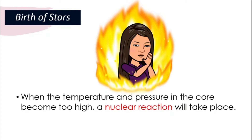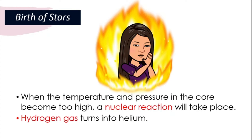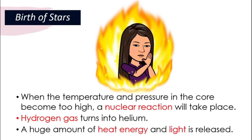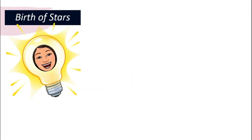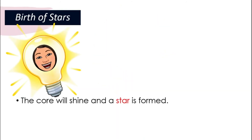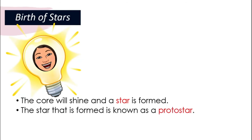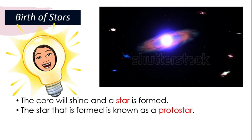A nuclear reaction is a very big explosion. That is when the hydrogen gas will start turning into helium, and a huge amount of heat energy and light is released. Then this core will start to shine — that is when a star is born. This baby star that is just born is called a protostar.